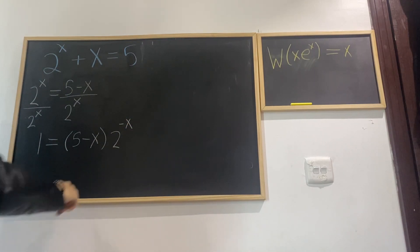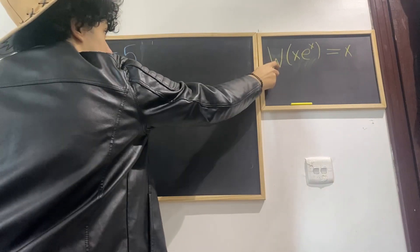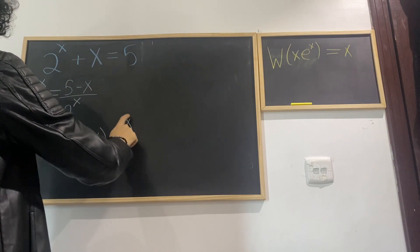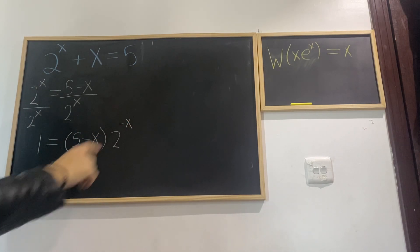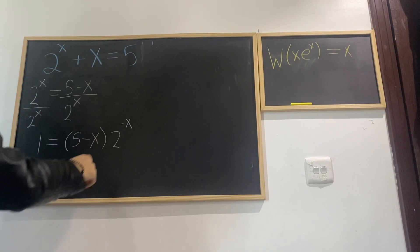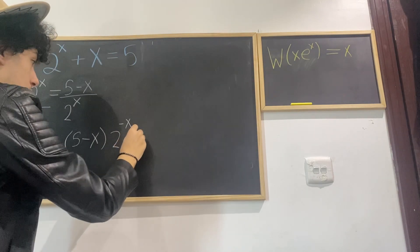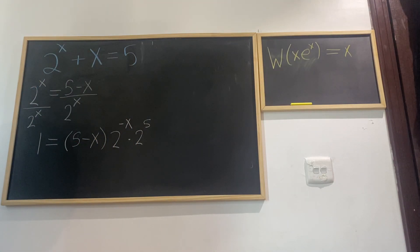Now let's treat this 2 as an e so we can get that general look of the Lambert W function. The exponent must equal the coefficient for us to use the Lambert W function, but in this exponent we're missing a 5. So what we can do is multiply both sides by 2 to the power of 5, because when you multiply with the same base, the exponents add up.